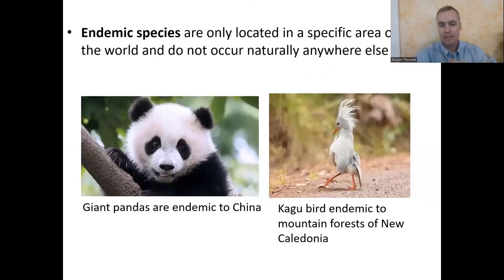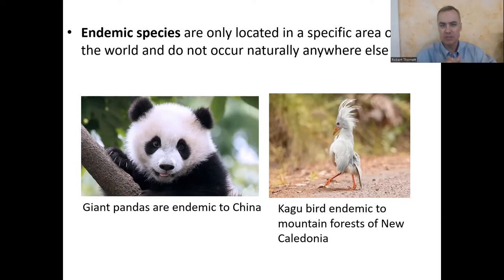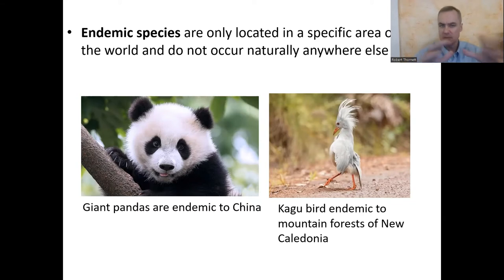By contrast, the opposite of cosmopolitan species would be endemic species, which means that species is only located in a particular specific area of the world and does not occur naturally anywhere else. If it's in a zoo somewhere else because someone caught one and brought it, that doesn't count.